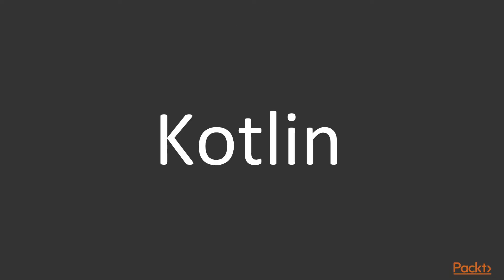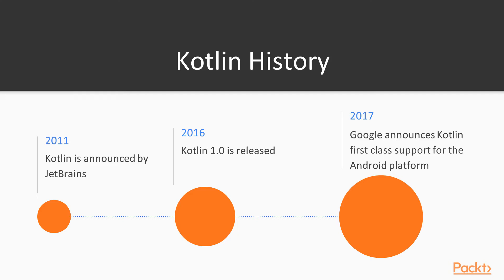Let's go through a brief introduction about Kotlin. Kotlin was first announced by JetBrains, the same company behind IntelliJ IDE, in 2011 as a language to replace Java on the JVM. Five years later, Kotlin 1.0 was released in 2016, making it ready for production use. And just a year after, Google announced Kotlin as first-class support for the Android platform. Since then, Kotlin has been a very popular language and many people are interested in using it in production.